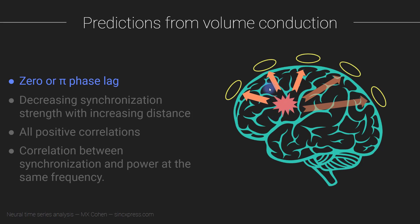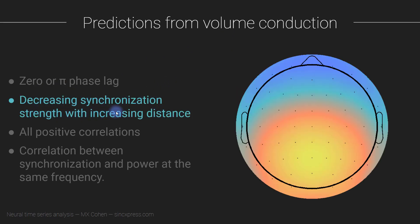So the point is: if your synchronization is spurious because of volume conduction, you can expect the phase synchronization to be at zero or pi phase lag. Another prediction from the volume conduction artifact is decreasing synchronization strength with increasing distance. For example, if you compute synchronization between one electrode and all other electrodes — bivariate synchronization between every possible pair related to that seed electrode — and then make a topographical map, the synchronization strength gets weaker the further away you get from the seed electrode.